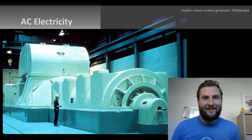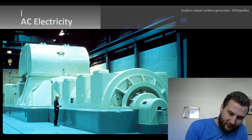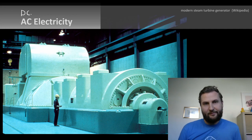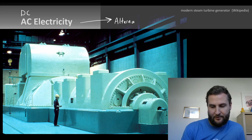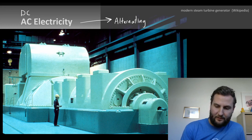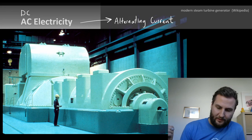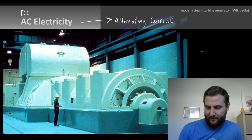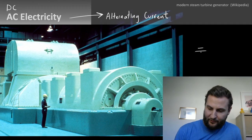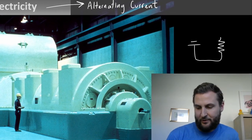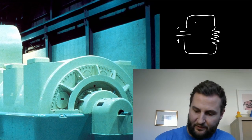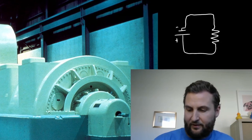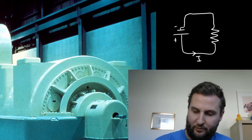Kia ora folks, it's Wednesday. Let's talk about AC electricity, compared to DC electricity which means direct current. AC means alternating current. In a DC circuit, the current leaves the positive terminal, goes through some load, and returns to the negative terminal — the current flows in one direction and then returns through the load in the other direction.